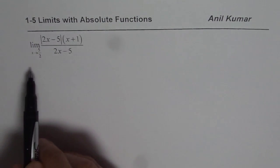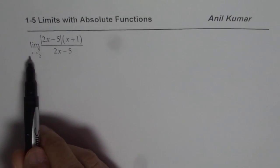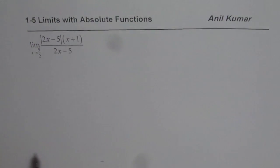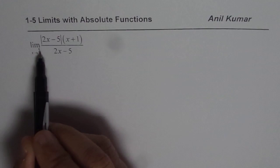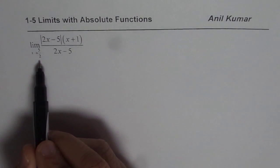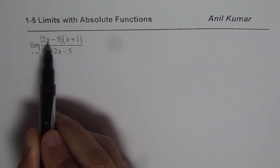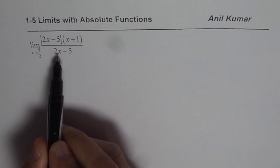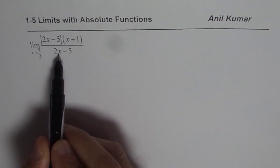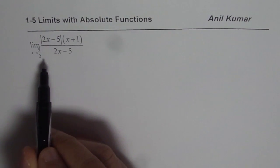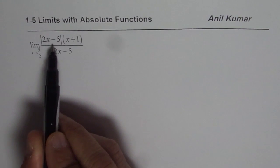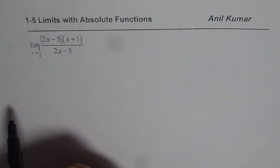The limit is as x approaches 5 over 2. What you will notice here is that if I substitute 5 over 2, then my numerator and denominator both become 0, giving us 0 over 0. So directly by substitution, we cannot find the limit.